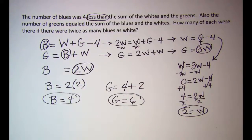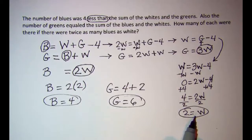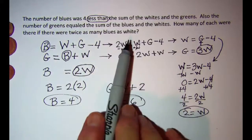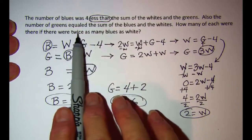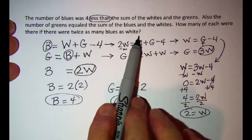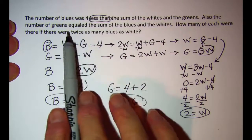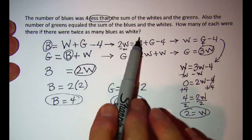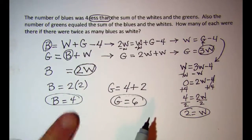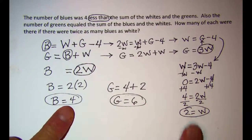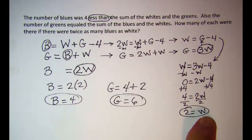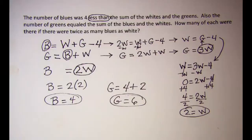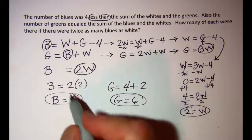And you can check yourself back up in here in any of the sentences. I'm particularly concerned with this last one. It says there were twice as many blues as whites. So is there twice as many blues as whites? Yes there is. So I'm happy with these answers.